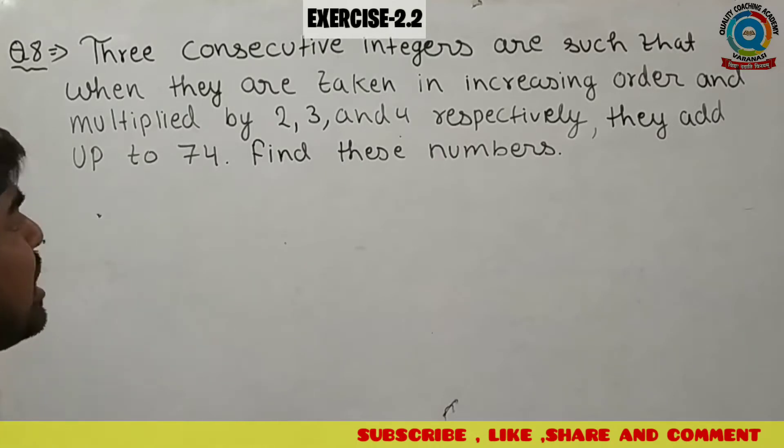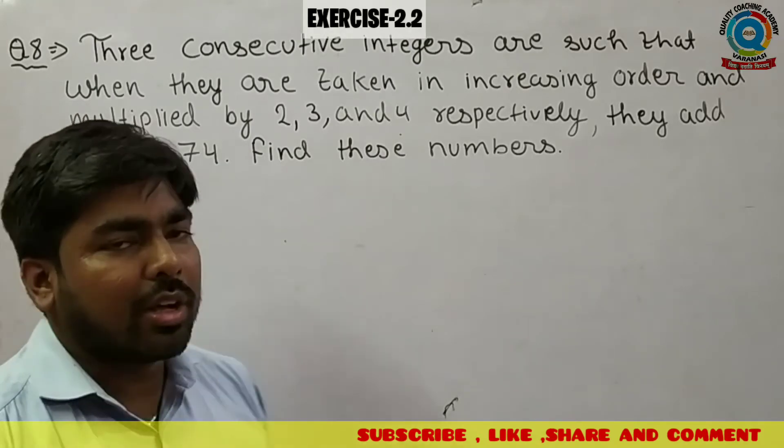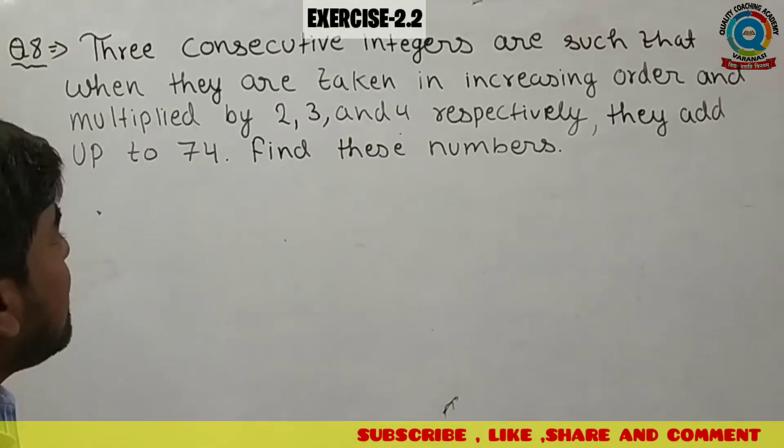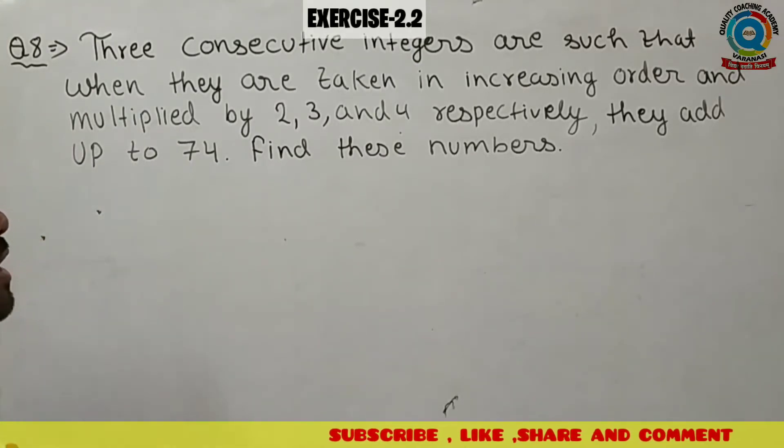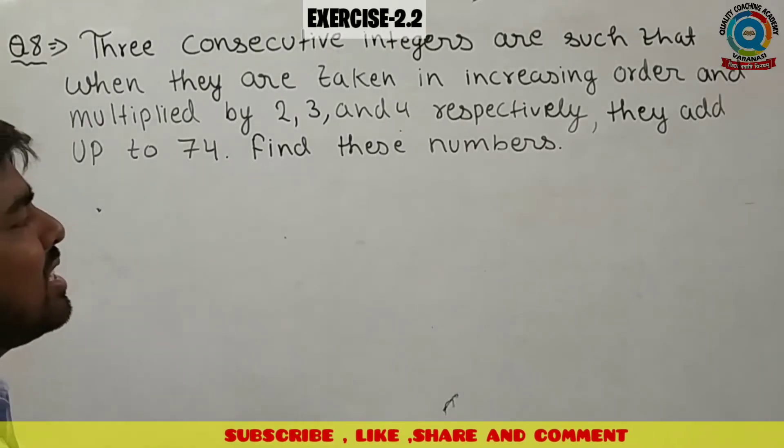Question says that three consecutive integers are such that when they are taken in increasing order and multiplied by 2, 3 and 4 respectively, they add up to 74. Find these numbers.